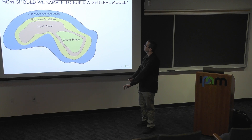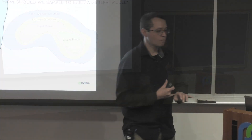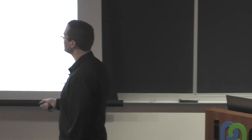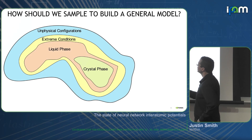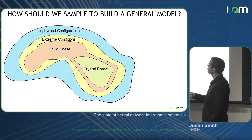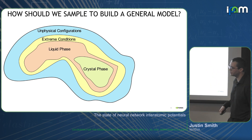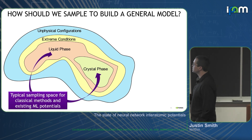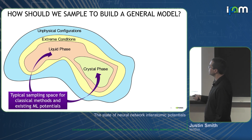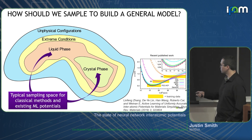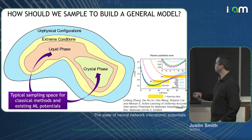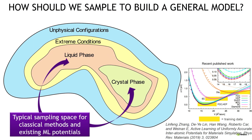I want to talk about how we should think about building a general model. In this diagram, I show the space of all 3D point atoms in some space — including unphysical configurations, extreme conditions, liquid phase, crystal phase. Typically, sampling methods for ML potentials go directly to the thing they want to sample: they sample a crystal phase, they sample a liquid phase. That's actually what was done, even in an active learning framework in 2019 by Roberto Car and Wanghan — they basically sampled aluminum starting from the crystal structure out into liquid phase to sample all these different regions of space, showing really great results with DeepMD.